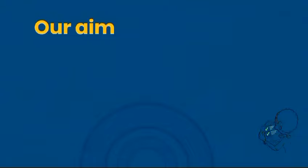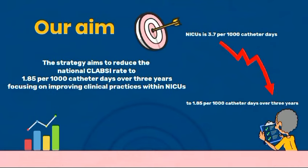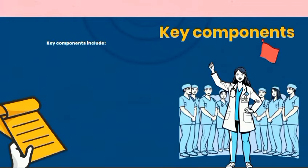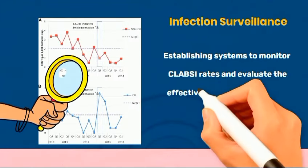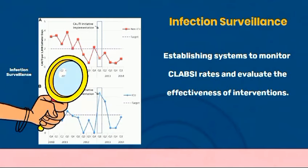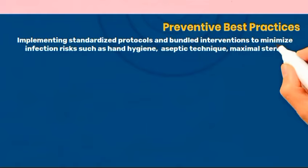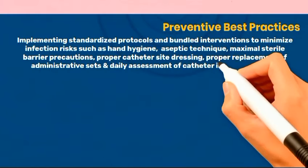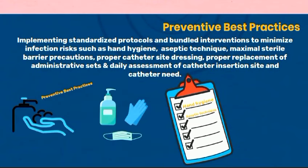The strategy aims to reduce the national CLABSI rate to 1.85 per 1,000 catheter days over three years, focusing on improving clinical practices within NICUs. Key components include: 1. Leadership and governance — ensuring strong leadership in NICUs to motivate teams effectively. 2. Infection surveillance — establishing systems to monitor CLABSI rates and evaluate the effectiveness of interventions. 3. Preventive best practices — implementing standardized protocols and bundled interventions to minimize infection risks, such as hand hygiene, aseptic technique, maximal sterile barrier precautions, proper catheter site dressing, proper replacement of administrative sets, and daily assessment of catheter insertion site and catheter need.